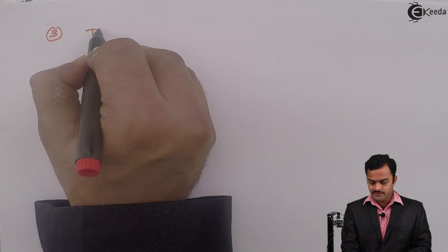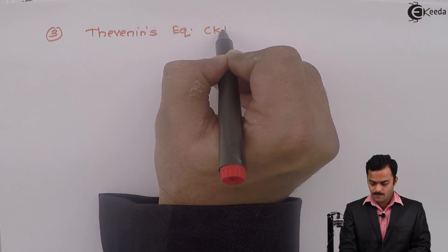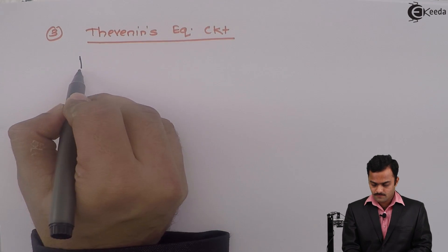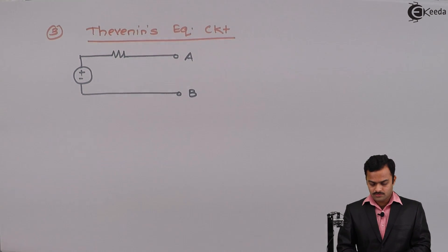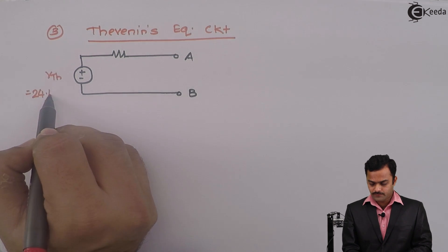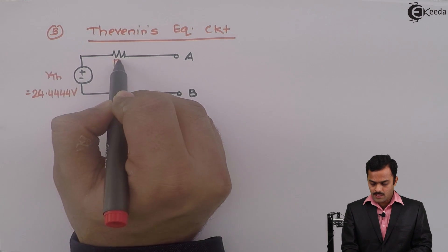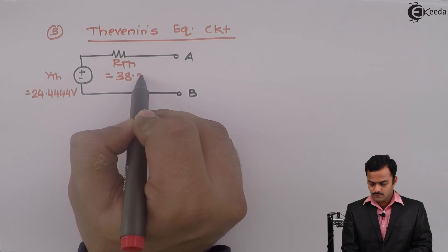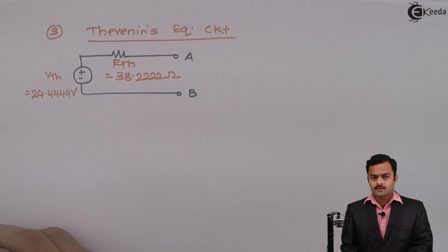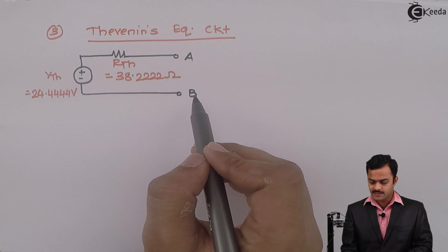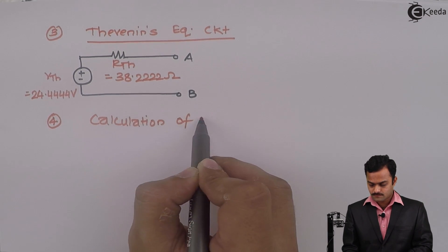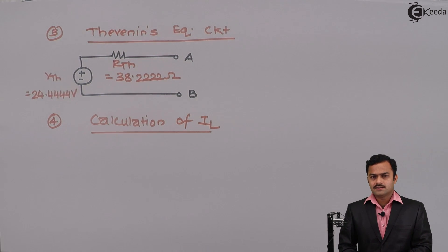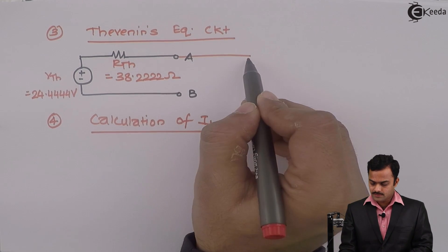Step number two is over. Let's go to step number three, which is the Thevenin's equivalent circuit. It will have VTH in series with RTH. VTH is 24.4444 volts and RTH is 38.2222 ohm, with A positive with respect to B. We have considered three values of RL, so let's connect RL to this circuit.